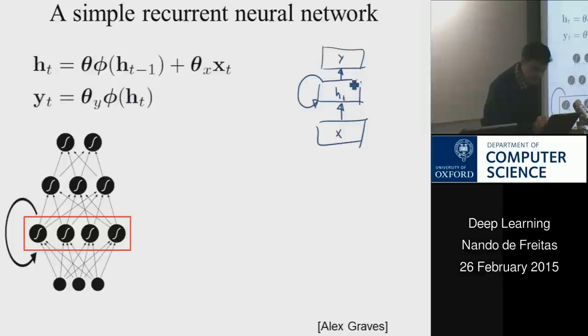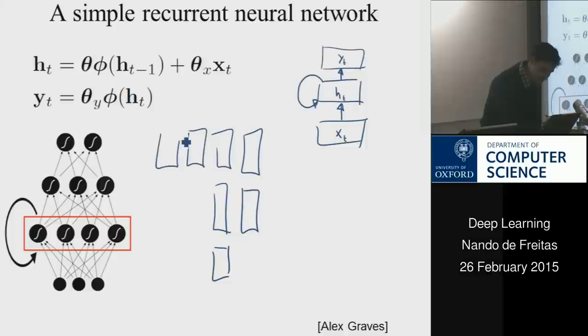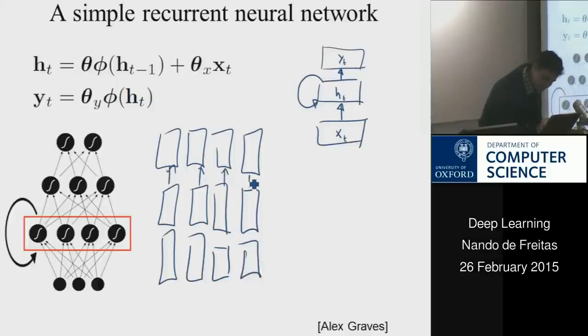So another way to draw this network is to expand it over time. This just gives you a single time slice of the network. Let's introduce the time index. Another way to draw this that you'll find is when people try to expand these networks. And the way I'm going to expand them is by going backward like this.